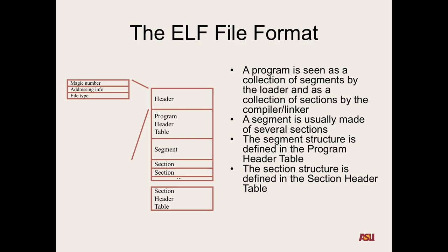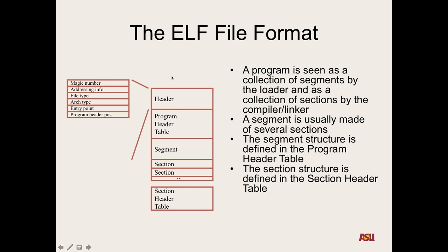There's a byte for the file type specifying endianness — little endian or big endian. It then has details about the specific architecture: is it x86, MIPS, or ARM? You can have 32-bit ARM where addresses are still 32-bit, but the architecture is ARM not x86, even with the same ELF structure. The entry point field is critical metadata that tells the operating system where to start executing this binary. Then there are offsets for the program header and section header, plus the size of the header itself.